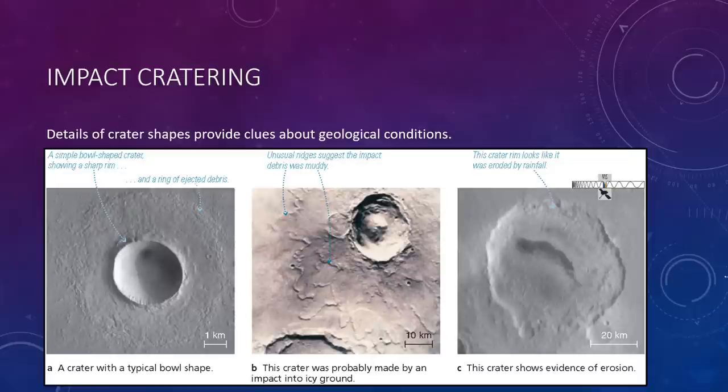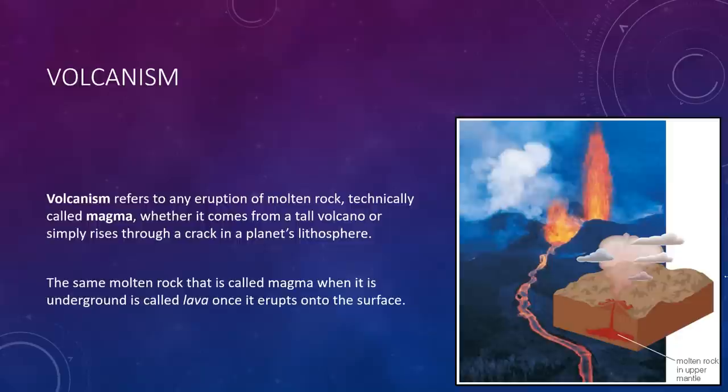Details of crater shapes provide clues about geological conditions. For example, this figure contrasts three craters on Mars. The crater in figure 1, that on the left, has a simple bowl shape, as we expect from the basic cratering process. The crater in the second figure has an extra large bump in its center and appears to be surrounded by mud flows, suggesting that underground water or ice melted or vaporized on impact. The muddy debris then flowed across the surface and hardened into the pattern that we see today. The crater in figure 3 shows obvious signs of erosion. It lacks a sharp rim and its floor no longer has a well-defined bowl shape. This suggests that ancient rainfall eroded the crater and that the crater bottom was once a lake. Studies of crater shapes on other worlds provide similar clues to their surface conditions in history.